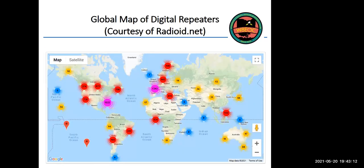Here's a global map of repeaters from Radio ID — this snapshot was taken around February or March of this year. You can see the number of repeater sites connecting to a network. In our region, which is almost the central part of the United States, we have about 1,500 repeater systems that are interconnected.